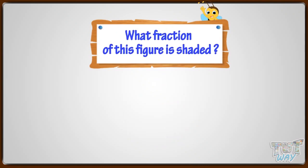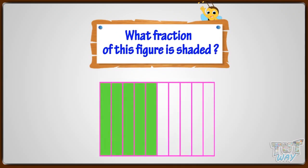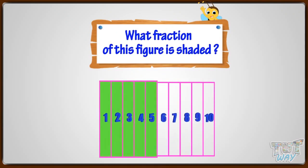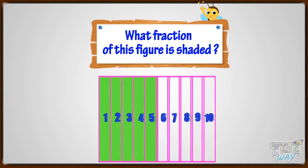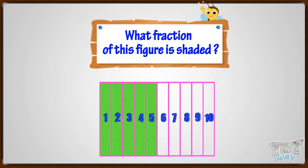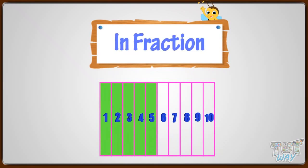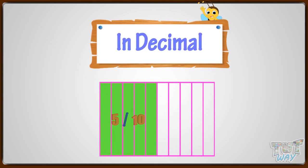What fraction of this figure is shaded? 5 parts out of 10 parts are shaded. So in fractions, we write it as 5 by 10. And in decimals, we write it as 0.5, or 5 tenths.